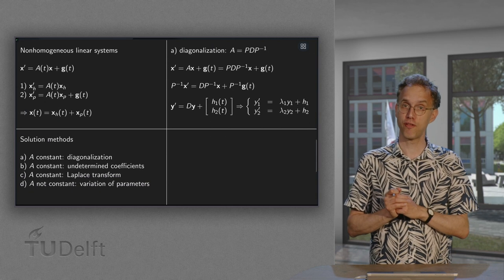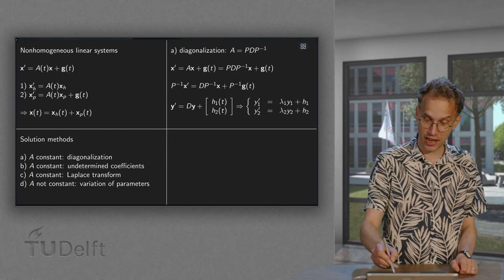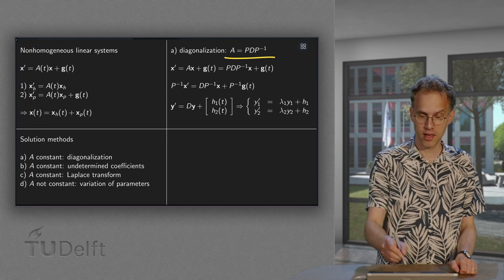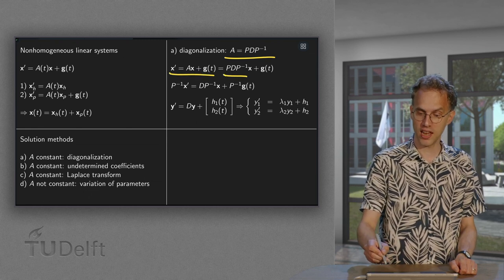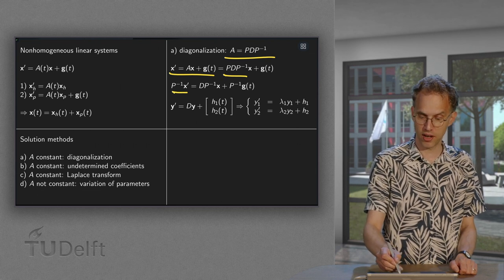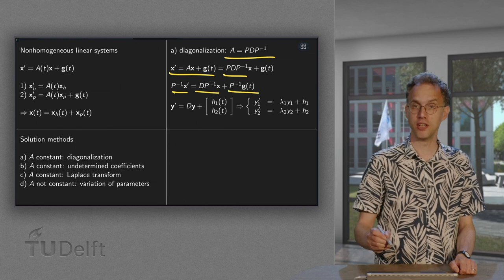So what about the first two methods? What's the idea? If A is diagonalizable equals PDP inverse. What's the plan? You have x prime equals A times x plus g. Multiply with P inverse as usual on the left. So you have here D times P inverse times x and you also get the P inverse over there.